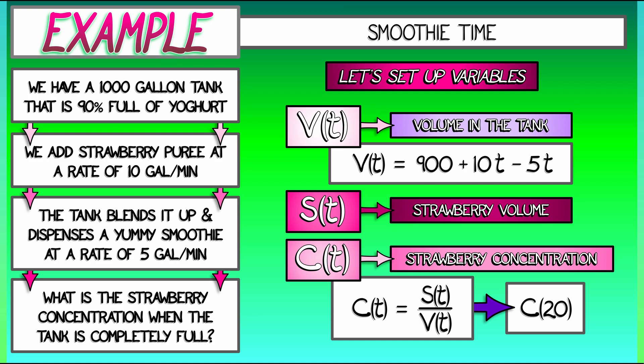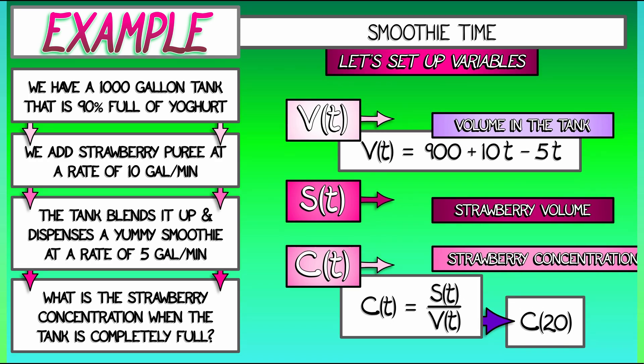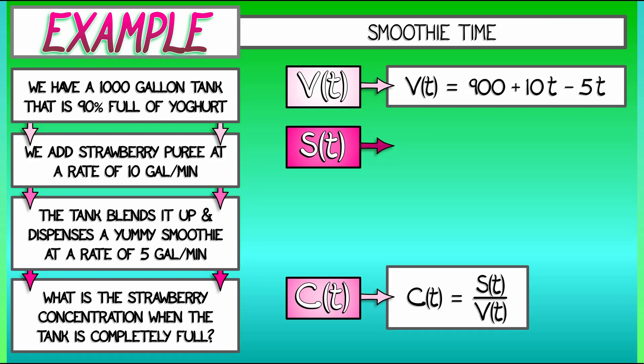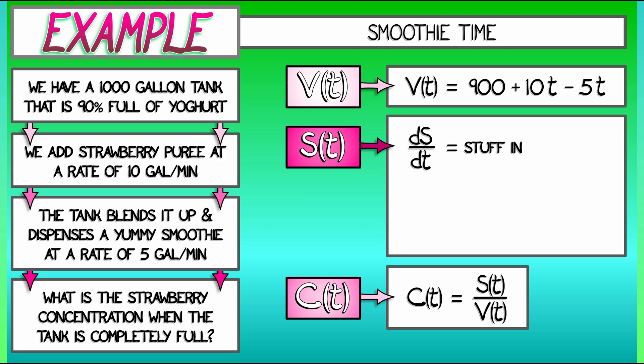We know the volume. Let's write down a differential equation for S of t, the amount of strawberry stuff. And if we could solve that, we could get the concentration from there. So what is dS/dt? It's the amount of stuff coming in minus the amount of stuff coming out. This is all in terms of rates, since this is dS/dt.